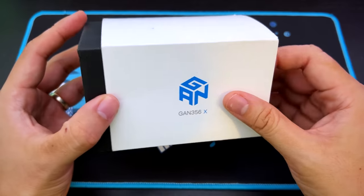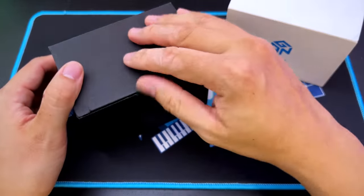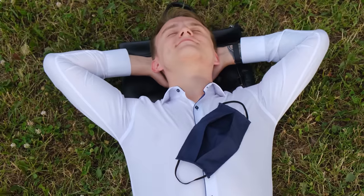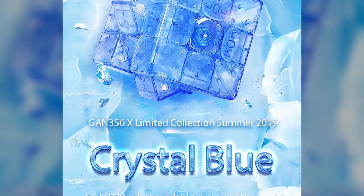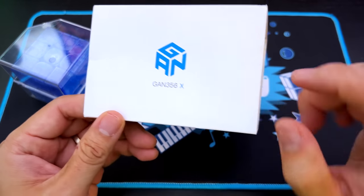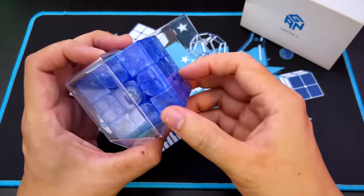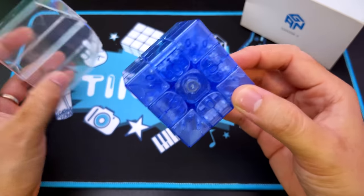Let's do this in chronological order, going all the way back to 2019, when Gan released the crystal blue. 2019, the world was a much simpler place then. This limited edition cube was based off the 356X, which was their flagship cube that year. It was a beautiful cube. That was actually my main 3x3 that I used for quite a long time. Gan made a really big deal of the fact that only 999 of these cubes were made around the world, which is pretty cool.